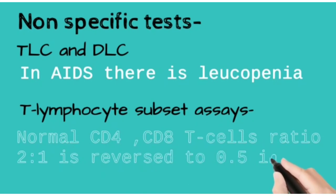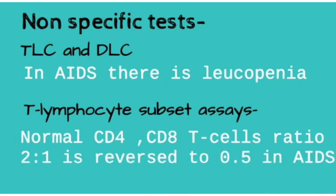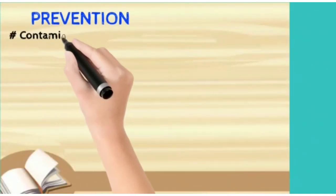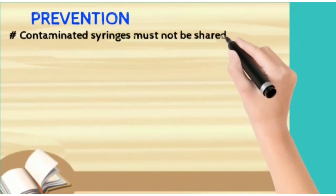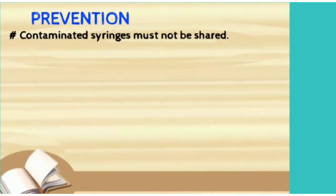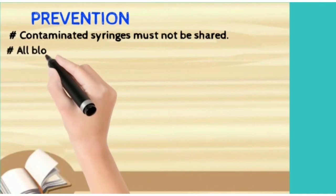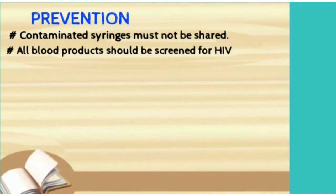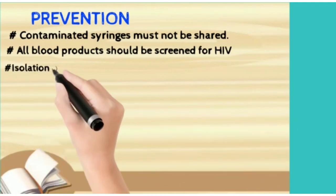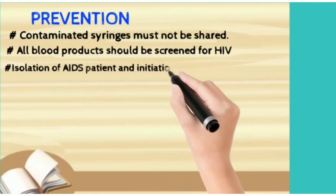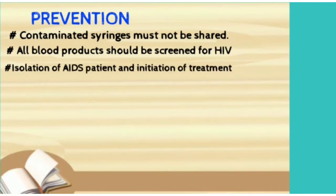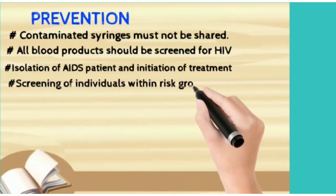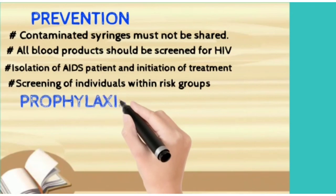For prevention of HIV: contaminated syringes must not be shared, and all blood products should be screened for HIV. Isolation of AIDS patients is done and initiation of treatment should be as early as possible. Screening of individuals within risk groups is also important.